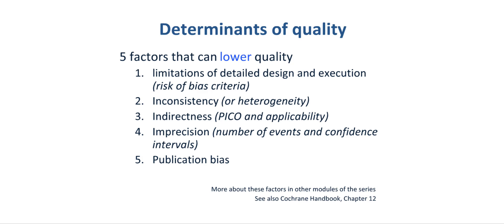The second factor is inconsistency or heterogeneity of results across studies. The third is indirectness. We are specifically referring to the PICO criteria and, in other terms, it could be called applicability. The fourth factor is imprecision. This is primarily based on the number of events and the number of participants and how that affects confidence intervals. The fifth factor is publication bias.